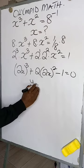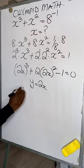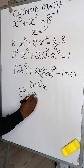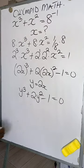So if we take our y to be equal to 2x, then that expression will give us y to the power of 3 plus 2y squared minus 1, and that will be equal to 0.